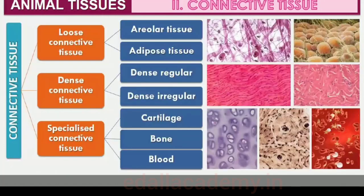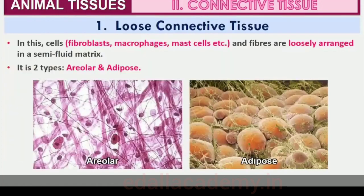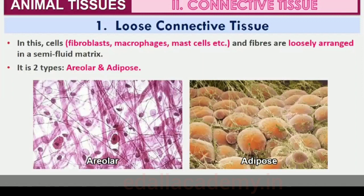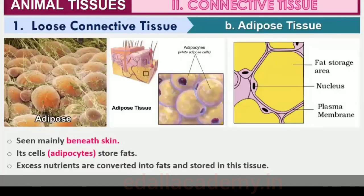Connective tissues are classified into three types: loose connective tissue, dense connective tissue, and specialized connective tissue. Loose connective tissue has cells and fibers loosely arranged in a semi-fluid ground substance — for example, areolar tissue present beneath the skin, which often serves as a support framework for epithelium and contains fibroblasts, macrophages and mast cells. Adipose tissue is another type of loose connective tissue located mainly beneath the skin, where cells are specialized to store fats.